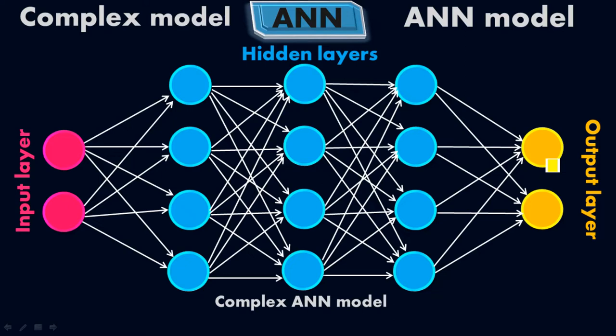So in this model we have multiple inputs with multiple hidden layers and also with multiple outputs — it is a bit complex artificial neural network model. Now, as I told you last time, each and every single cell must be connected with the other next cell in this model. When you look at this cell, in front of it we have four cells in this first hidden layer.